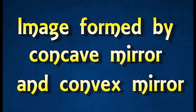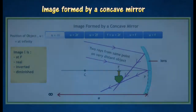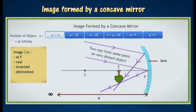Image formed by a concave mirror. When the object is placed at infinity, the image will appear at F, and it becomes inverted and diminished. This is usually used to form images of distant objects, as used in a reflecting telescope.